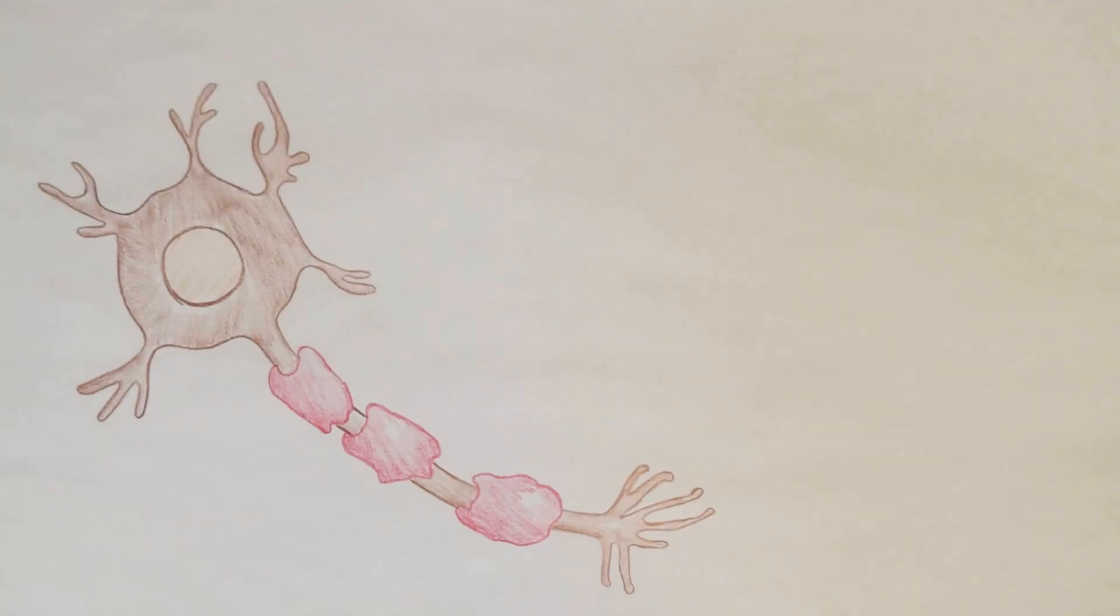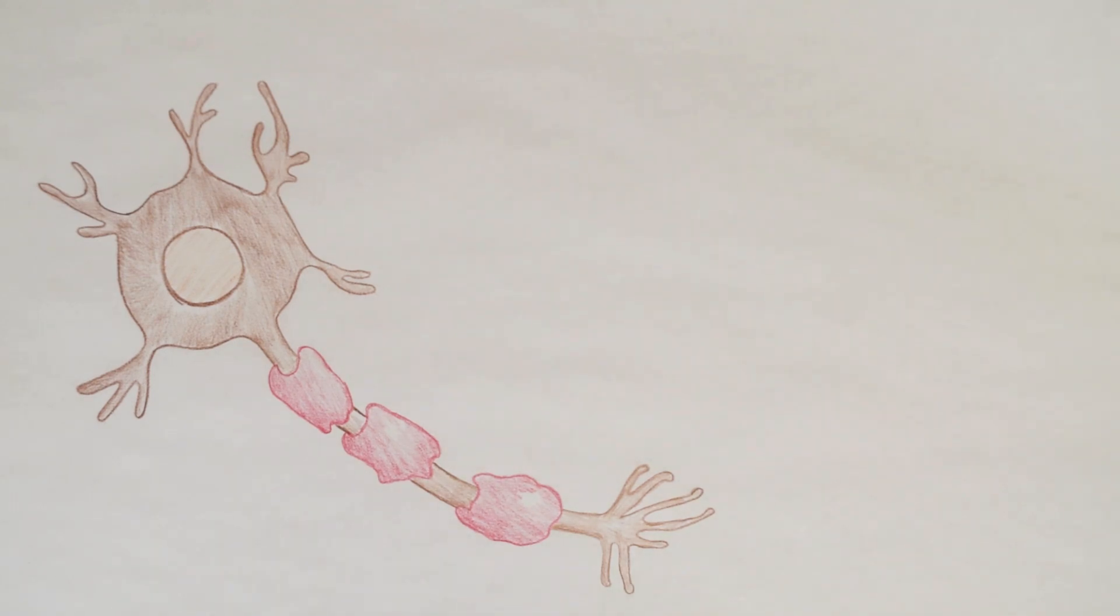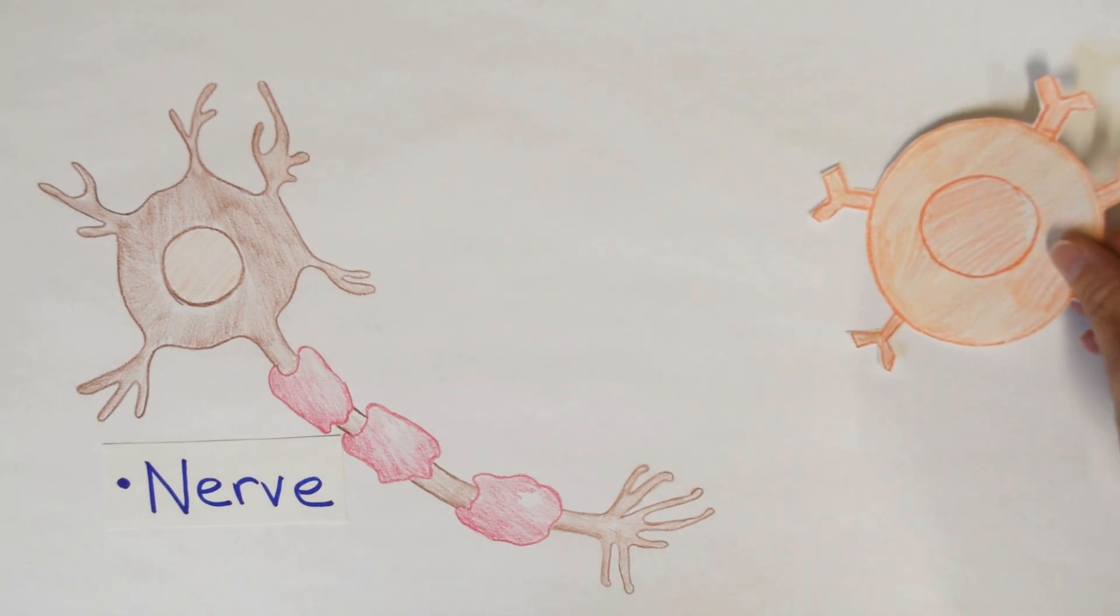So that all seemed good. Where does it go wrong? It goes wrong one to three weeks afterwards. Here I've drawn for you a nerve. Now the nerve is beyond like the blood vessels. So the immune cells traffic past the blood nerve barrier.